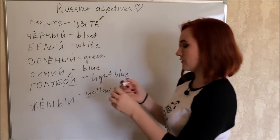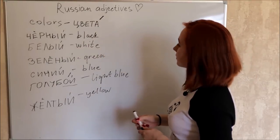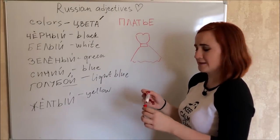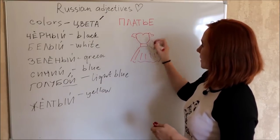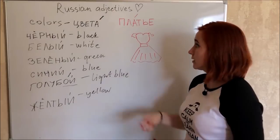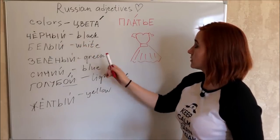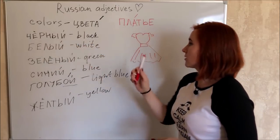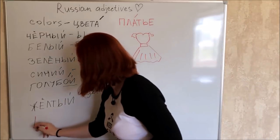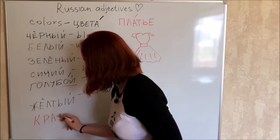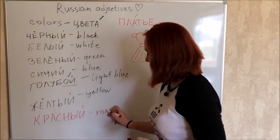I'll put the rest on the site in the lesson materials. It just looks like a dress — okay, it's a dress. Dress. Платье. Платье. So now let's decide which adjective to use. Let's pick the word черный. We don't have красный — red. Oh my goodness, how could we forget this important color? Red.